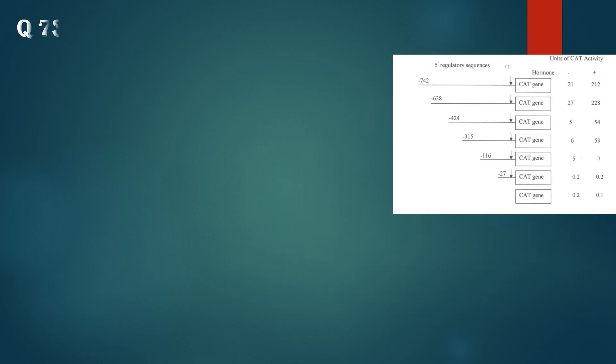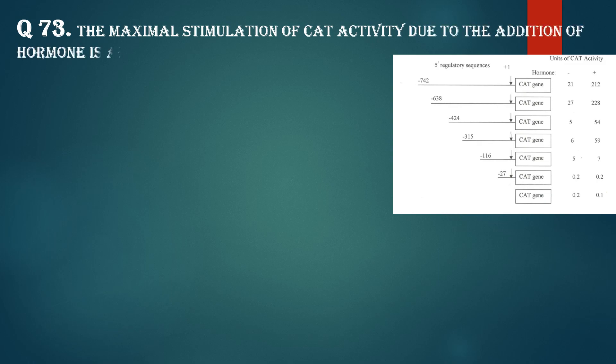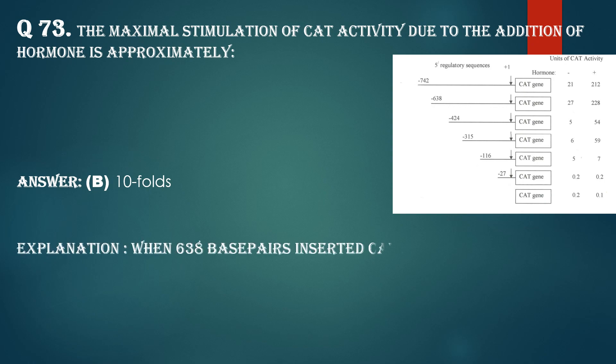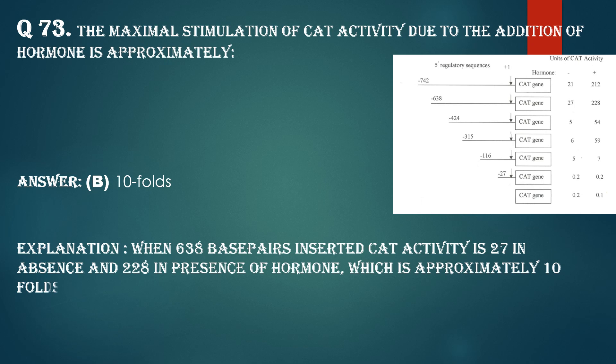Question number 73: The maximal stimulation of CAT activity due to the addition of hormone is approximately 10 folds. Explanation: When 638 base pairs were inserted, the CAT activity is 27 in absence of hormone and 228 in presence of hormone, which is approximately 10 folds increase.